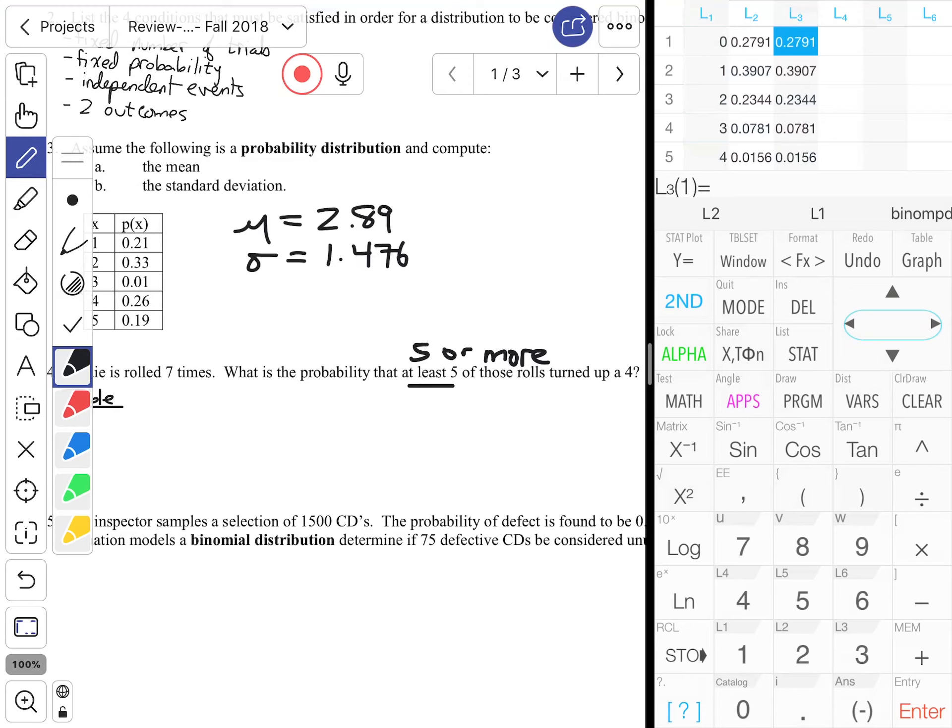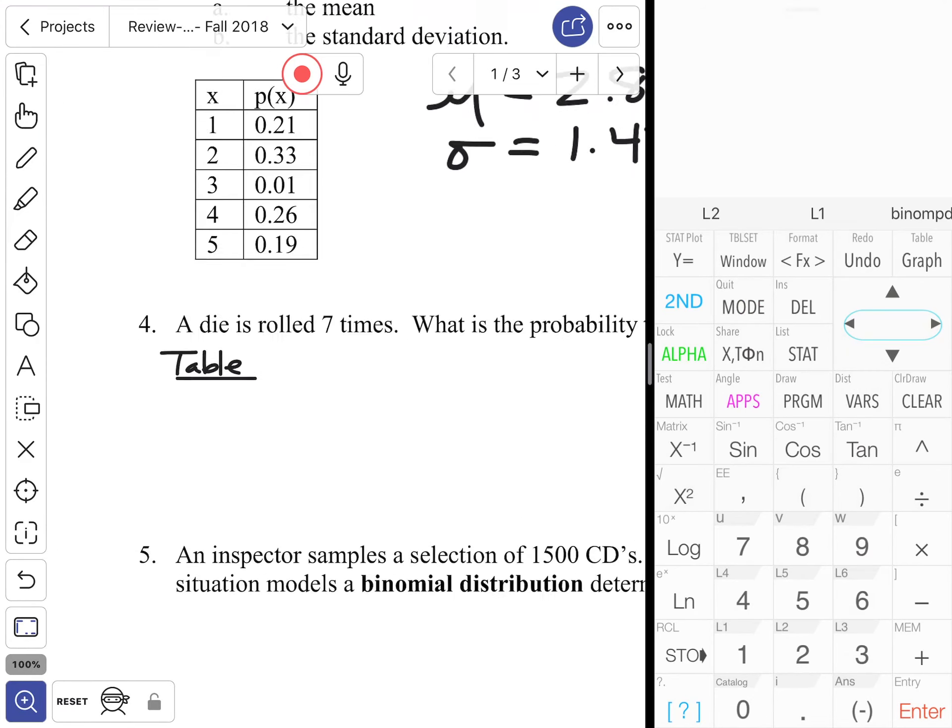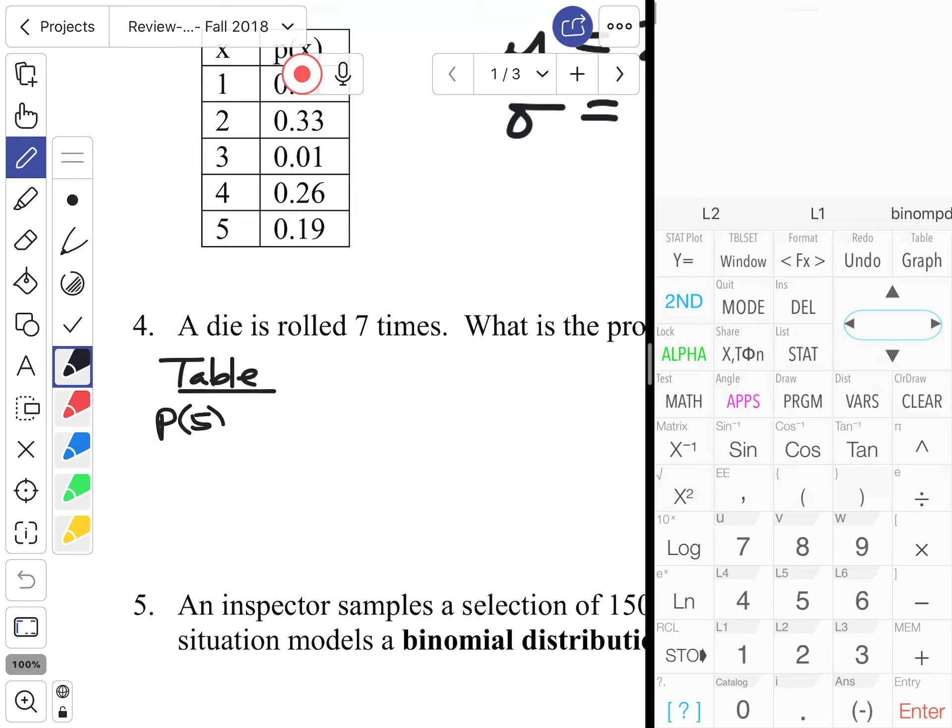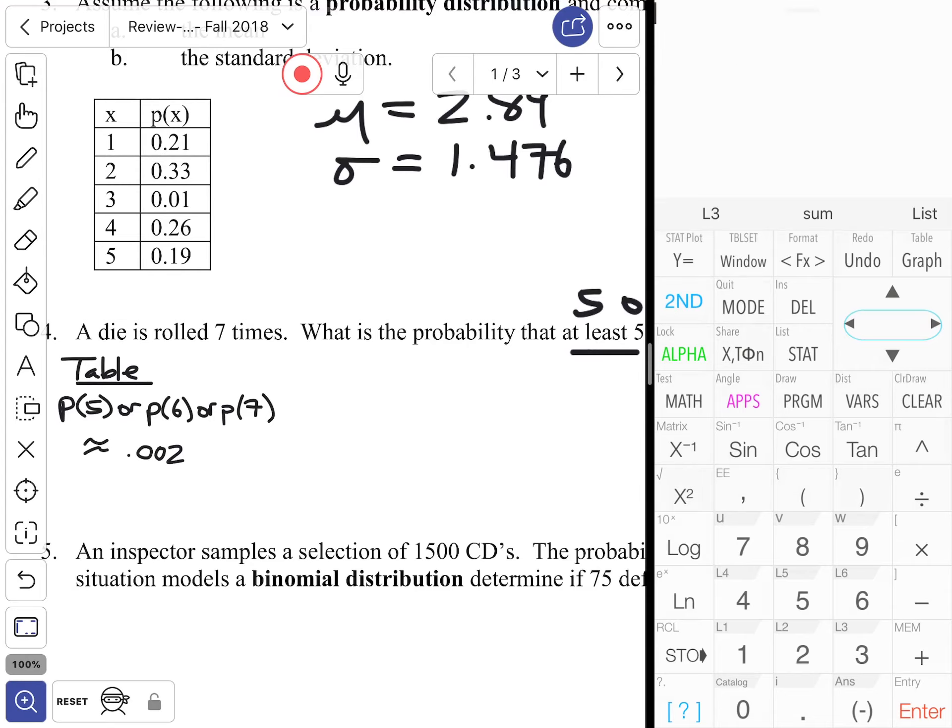Now in this case I'm just looking for at least five, so it's five or more. I'm just gonna do a quick copy paste job here. I don't want the zeroth, first, second, third or fourth. I only want the fifth, sixth and seventh. So I'm gonna quit out of here. I'm looking for the probability of five successes or six or seven. I'm gonna do second stat math five, the list I want to find the sum of is in list three, close it up and hit enter, and I'm gonna get about, well if I'm going three significant it would still round to 0.002.